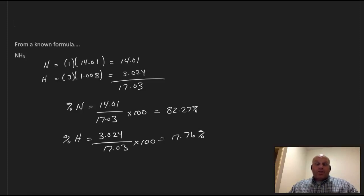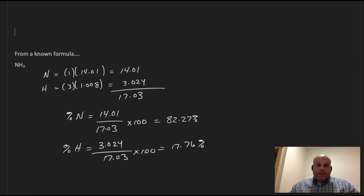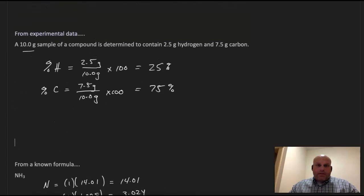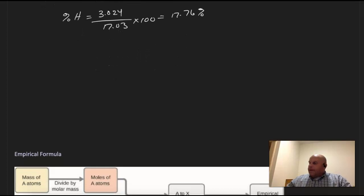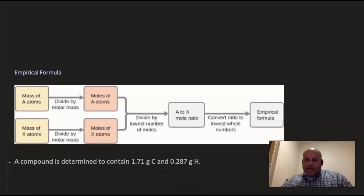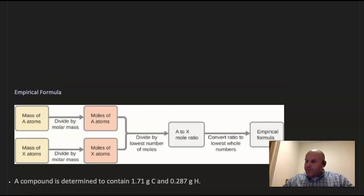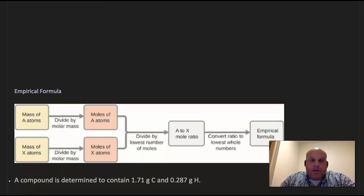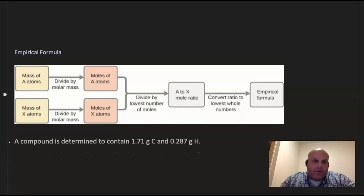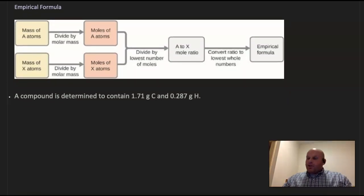So percent composition has two types of problems: calculating from a known formula, as shown here, and from experimental data. Next, we're going to talk about determining the empirical formula. I've given you a flowchart to help that process. The empirical formula is the simplest whole number ratio of atoms in a compound. The process: get masses, convert them to moles, divide both values by the smallest mole value, and then you'll get your ratio.